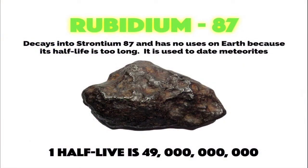And finally, rubidium-87. Rubidium-87 decays into strontium-87 and has no uses on earth because its half-life is just too long. What we actually use rubidium-87 for is dating meteorites. One half-life for rubidium-87 is equivalent to 49 billion years.